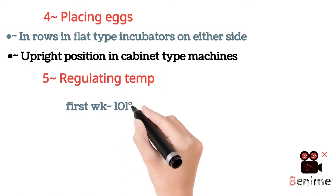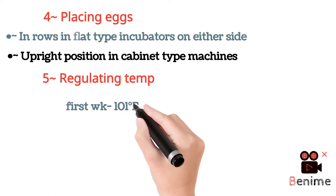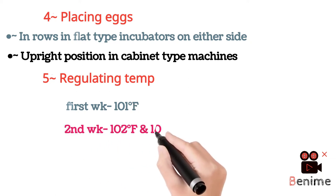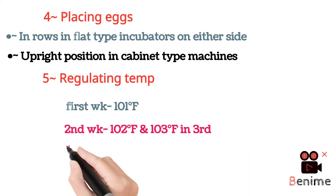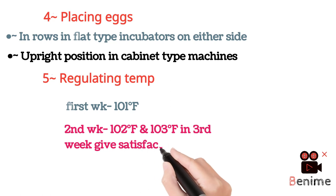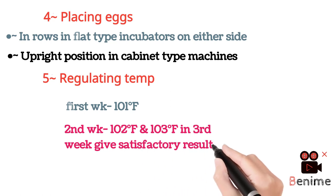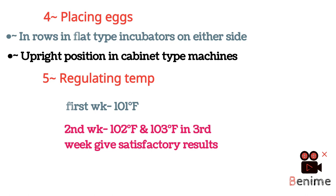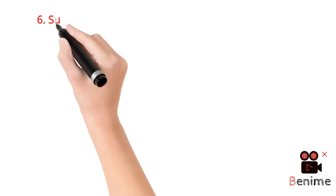The fifth factor is regulating the temperature. It is recommended for the best results that in the first week of incubation temperature should be 101 degrees Fahrenheit, while in the second week it should be 102 degrees Fahrenheit, and 103 degrees Fahrenheit in the third week, which gives the best results for hatchability of eggs.